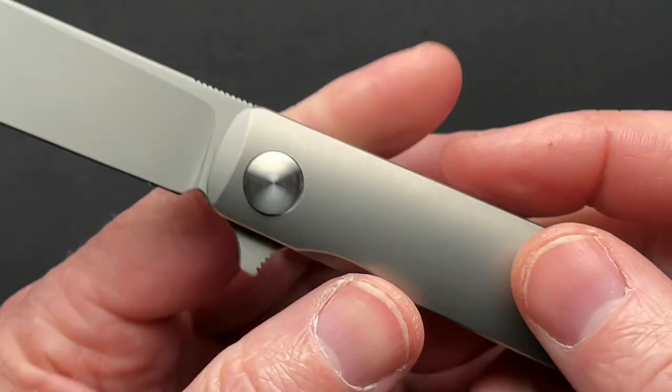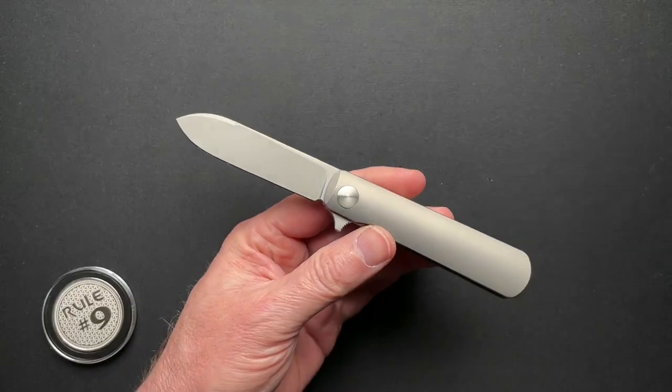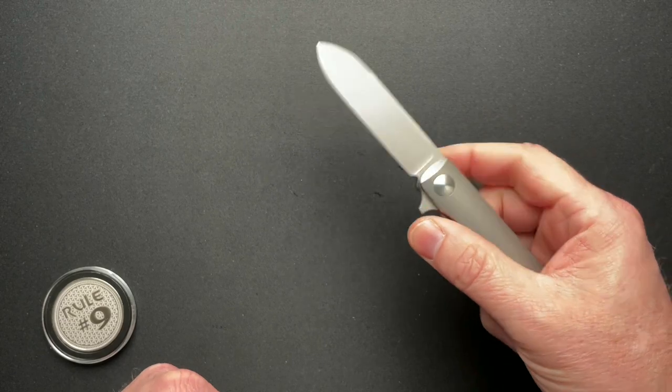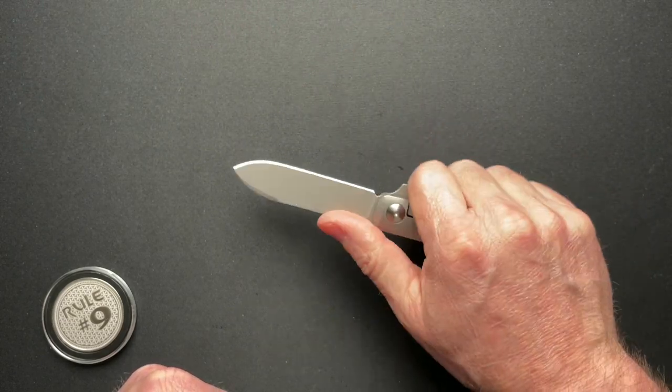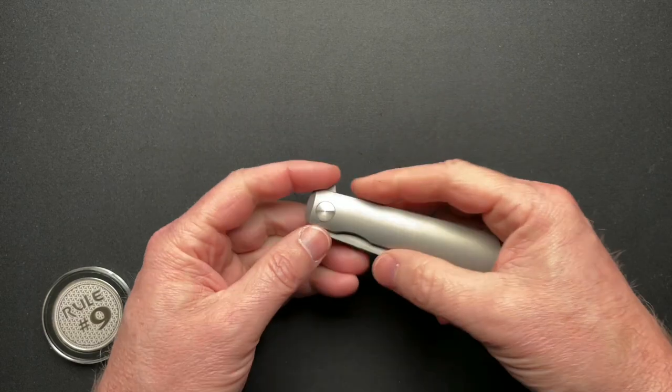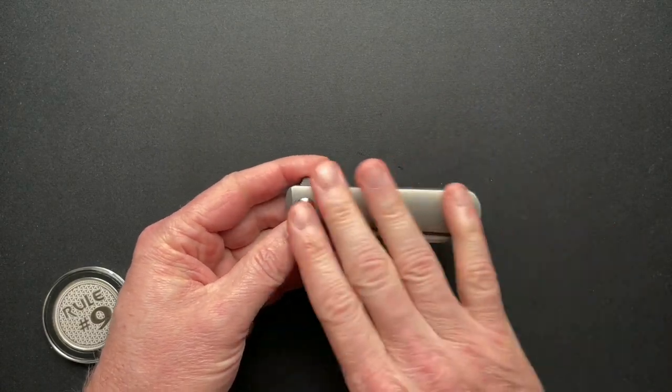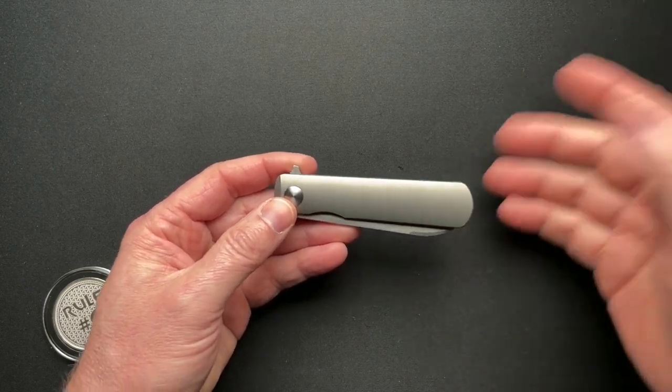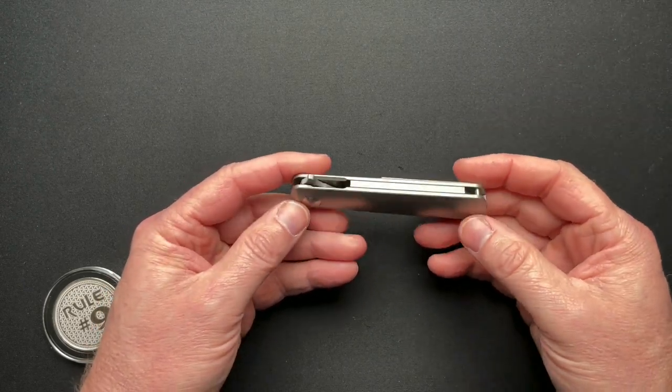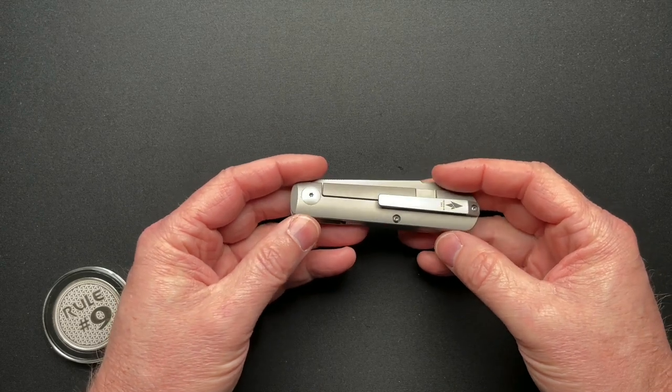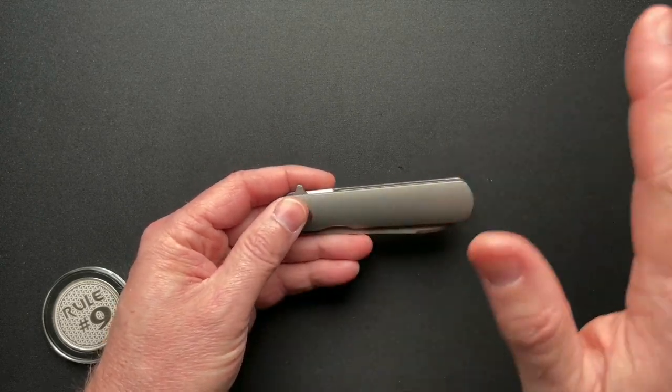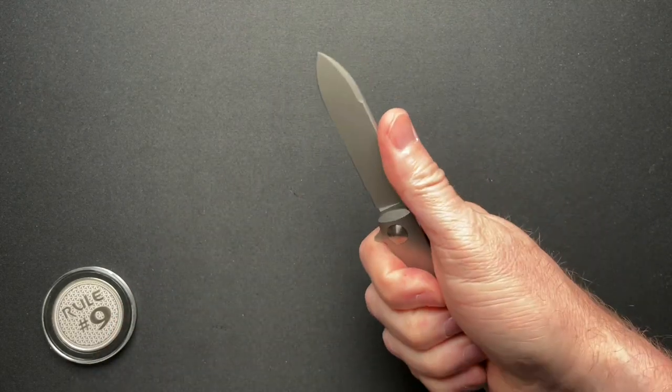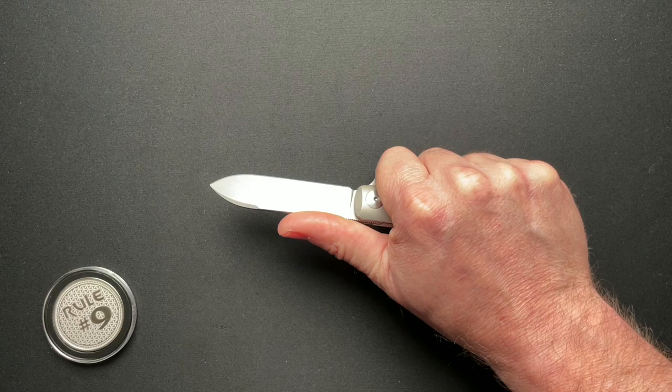They make a slip joint of this version, same basic size and shape, and then they also make the Invictus, which also comes in the same material. In the slip joint of the Otter, they have one with a carbon fiber scale, which is pretty cool because I kind of like carbon fiber. And in the Invictus, they have that also in some G10, titanium, a bunch of different options.